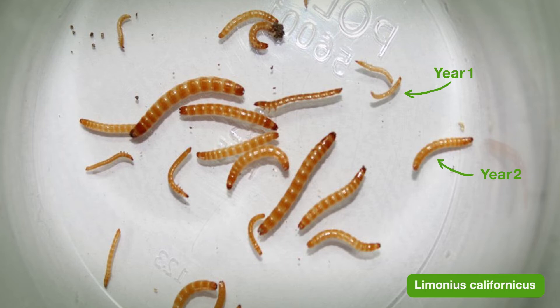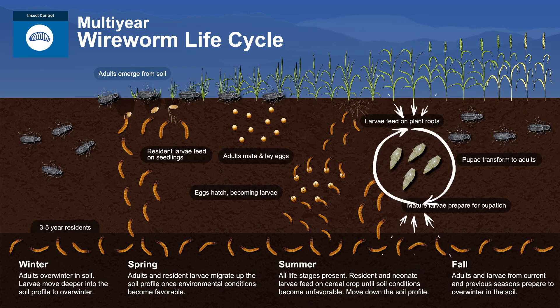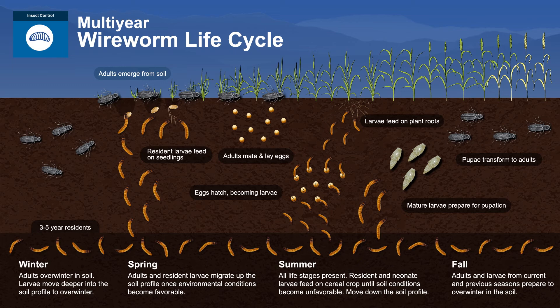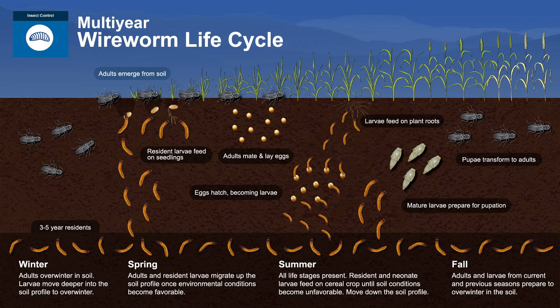In the second year the size is about doubled — half an inch. Third year, three quarters of an inch. And in the final year, they're about an inch long. In that final year, the wireworms pupate, usually later in the summer — late July getting into August. They're in that pupal state for about three weeks, then they form new adults, which stay in the ground throughout the rest of the summer, into the fall, and throughout the winter. Then they come out the following spring, and the whole life cycle starts all over again.